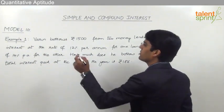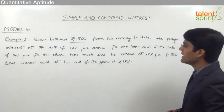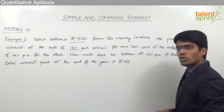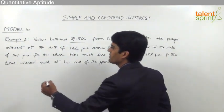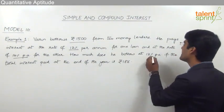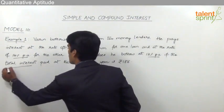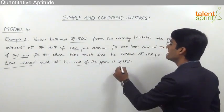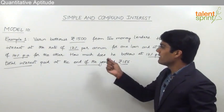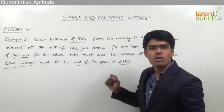As you can see, Varun has borrowed Rs 1500 from 2 different persons. He pays interest at 12% per annum for one loan and at the rate of 14% per annum for the other. We need to find out how much money was borrowed at the rate of 12% per annum if the total interest at the end of one year is Rs 186. The total amount that Varun has borrowed from two different persons is Rs 1500.